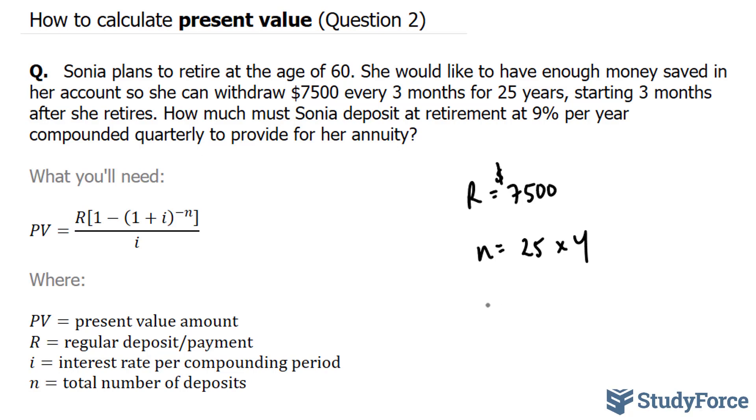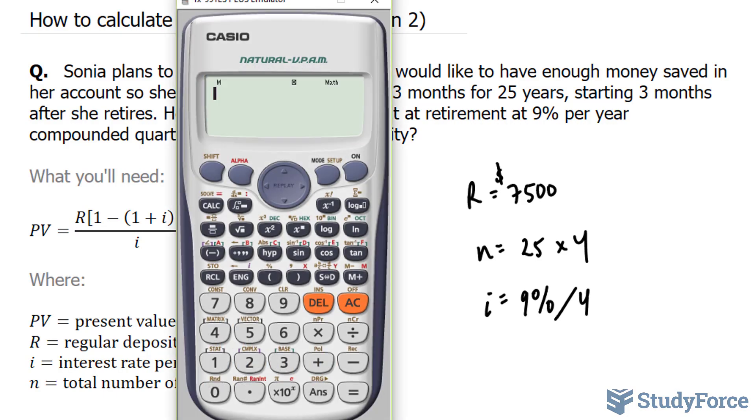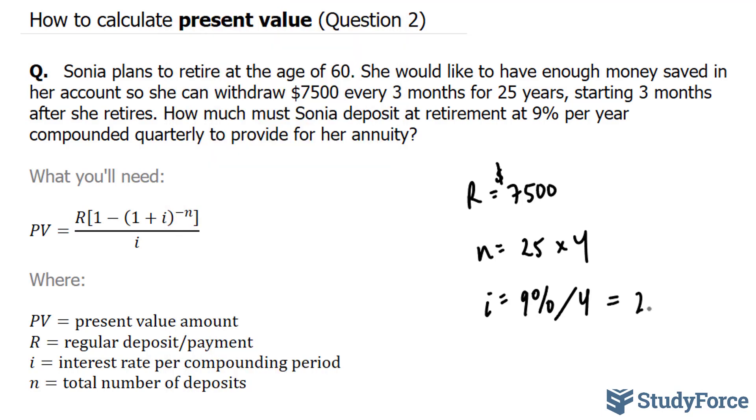Also, we know the percentage. The percentage interest is 9%, and what we have to do with this 9% is actually divide it by the amount of times it is compounded. And in our case it's quarterly, so we have to divide this number by 4. If we divide it by 4 using our calculator, we end up with 2.25% every 3 months.